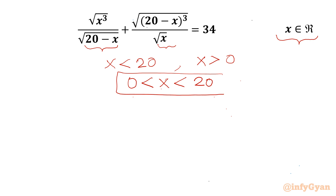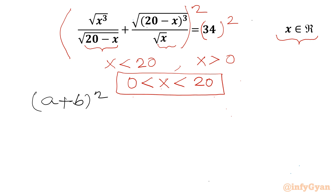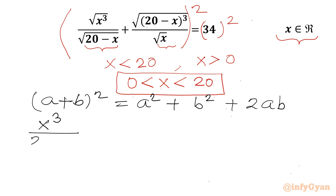Our answer will lie in this interval only. Now I will square both sides. Applying the identity (a + b)² = a² + b² + 2ab: a² gives us x cubed over (20 minus x), and b² gives us (20 minus x) cubed over x.